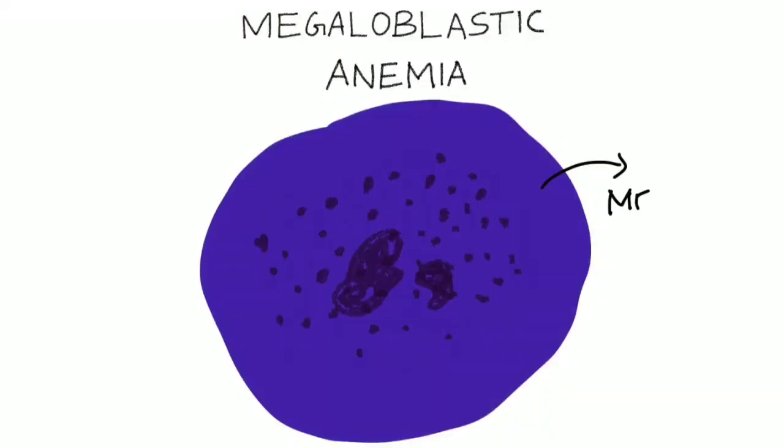Megaloblastic anemia is a condition which is characterized by the presence of abnormally large RBC precursor cells called megaloblasts in the bone marrow. Watch this video till the end to learn about the various things you must learn about megaloblastic anemia.